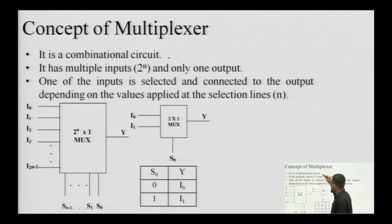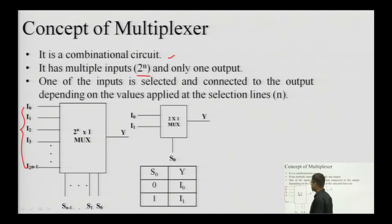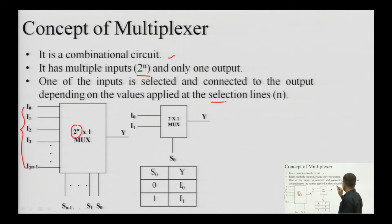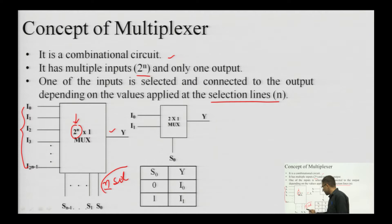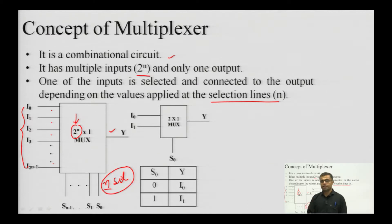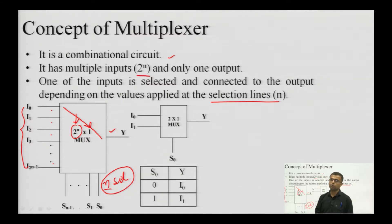Let us start with the concept of a multiplexer. A multiplexer is a combinational circuit. It has multiple inputs — 2 raised to power n — as seen from its block-level representation. For n select lines, there are 2^n inputs and the output is a single one. These n select lines select one of the 2^n possible inputs, and that selected input is connected to the output. Which input is connected to output is decided by the n select lines.